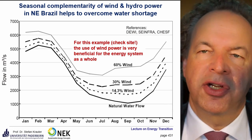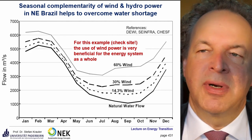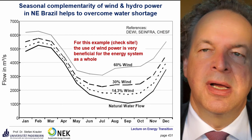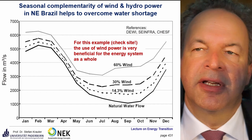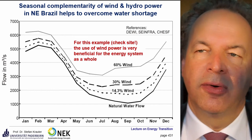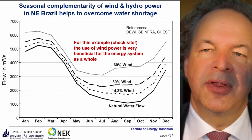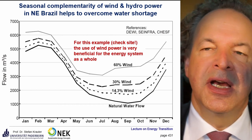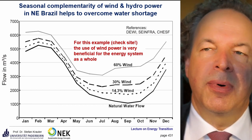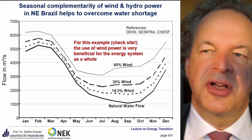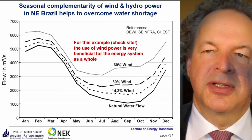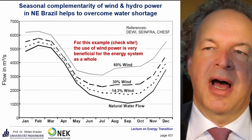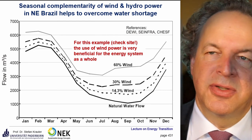For some locations there is very good complementarity between wind and solar — we will do an extra lecture on this. For the example of northeastern Brazil, there is very good complementarity between wind and solar, but also with other resources. Most wind occurs in September, but there is also a very dry season with not much water, so wind power can help avoid water scarcity and substitute dry hydropower plants during that period.